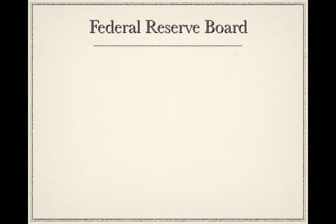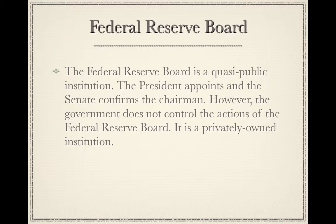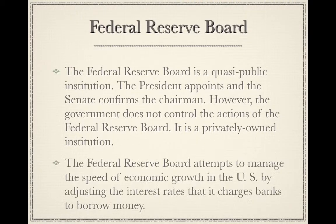The Federal Reserve Board is a quasi-public institution. The President appoints and the Senate confirms the Chairman; however, the government does not control the actions of the Federal Reserve Board, as it is a privately owned institution. The Federal Reserve Board attempts to manage the speed of economic growth in the U.S. by adjusting the interest rates it charges banks to borrow money. By lowering interest rates, it becomes less expensive to borrow, so businesses trying to start up can afford to take out a loan. On the other hand, if the economy becomes too active, the Federal Reserve Board may raise interest rates to slow down the economy and prevent an economic bubble — a situation where rapid growth then leads to a rapid collapse of the economy.